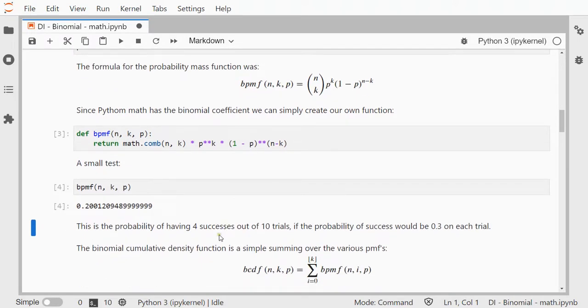This is the probability of having 4 successes out of 10 trials if the probability of success would be 0.3 on each trial.